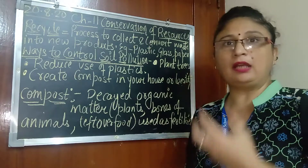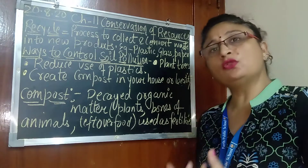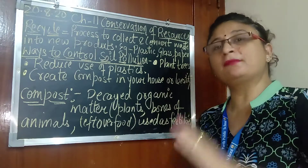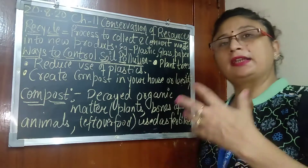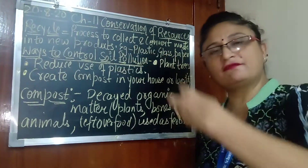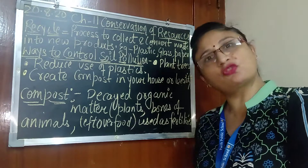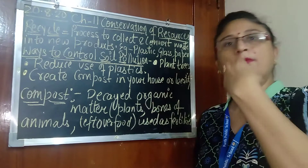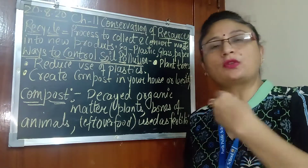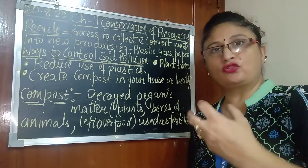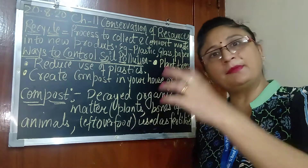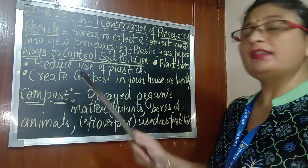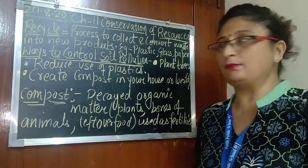The second method is to reduce the use of plastics. We should reduce plastic use because it is a non-biodegradable material — it is not converted into simpler form or manure. It also clogs the drains, and in this way it pollutes the soil.